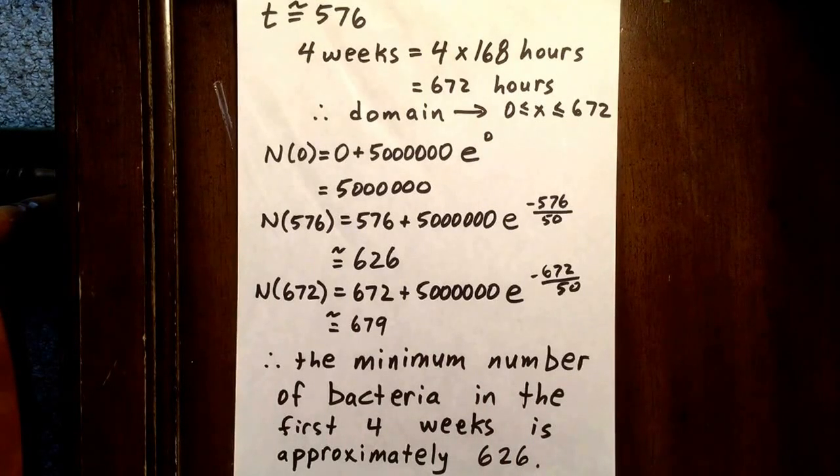So the minimum number of bacteria in the first four weeks is approximately 626.